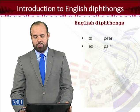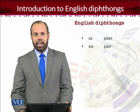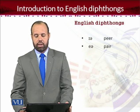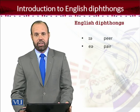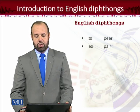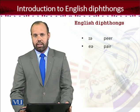Another centering diphthong is /eə/. The starting sound is /e/ and the ending sound is schwa. In words like 'pair' or 'bear.' These are the words which have this centering diphthong sound.